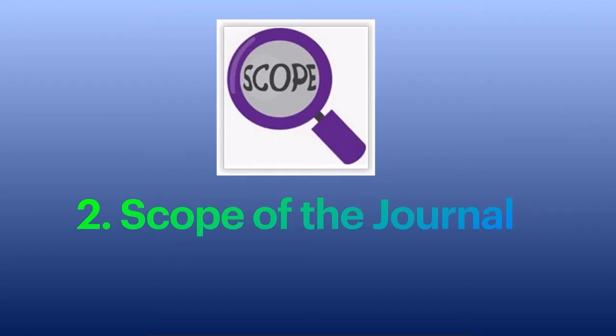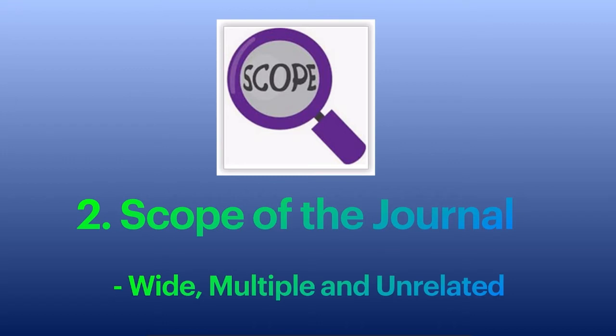Next is the scope of the journal. When we read about the scope in the 'About the Journal' section, most of the time the scope will be wide, numerous, and unrelated topics mixed together. When we find this kind of scope, you can suspect it to be a predatory journal.